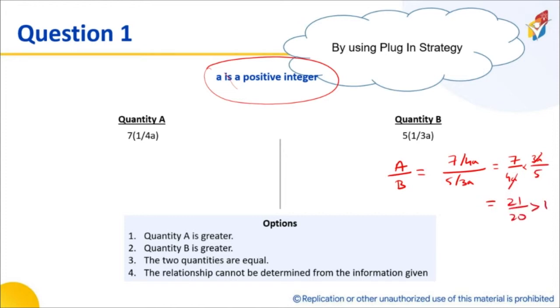A got cancelled, you got this as 21 upon 20, which is a greater value. So you can get the answer using the division method. Is it possible? Yes, it is possible using the division method.